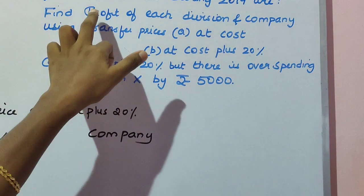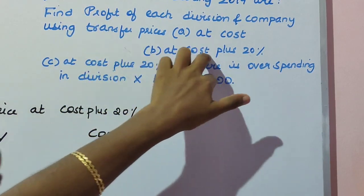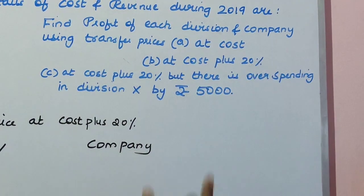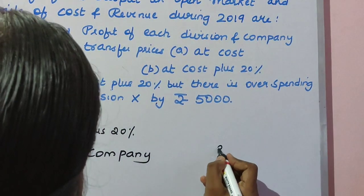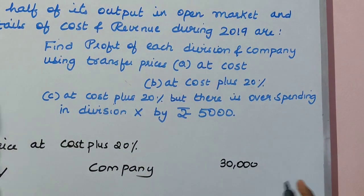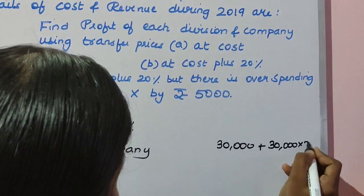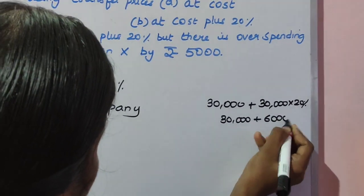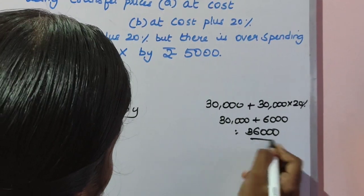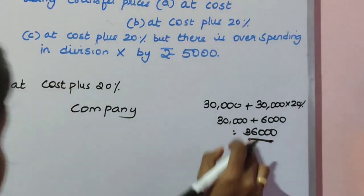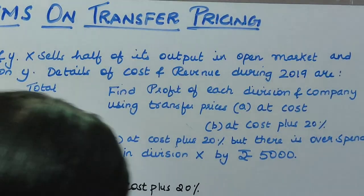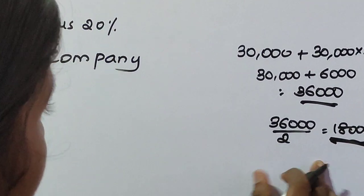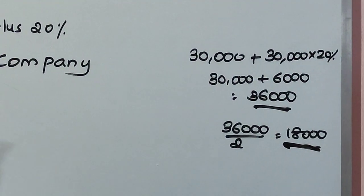Now we have to find the profit using transfer price at cost plus 20%. Transfer is done at cost plus 20%. The cost is 30,000, so cost plus 20% = 30,000 + (30,000 × 20%) = 30,000 + 6,000 = 36,000. Half of this 36,000 is transferred to division Y, so the transfer amount is 18,000.